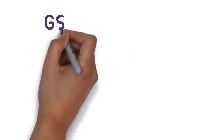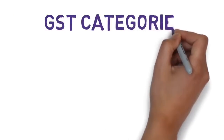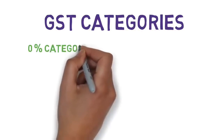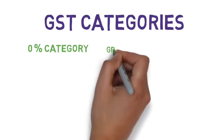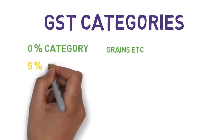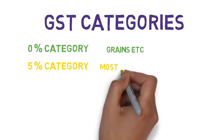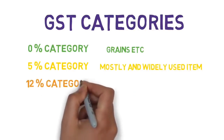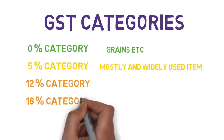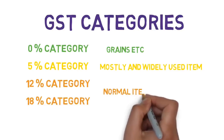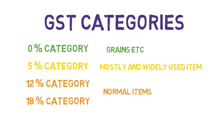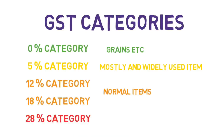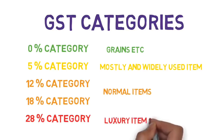We will also have 5 tax rate categories in GST in India. The 0% category will apply on food grains etc. The 5% category will apply on mostly and widely used items. The 12% and 18% categories will apply on items which are normally used. And the 28% category will apply on luxurious items.